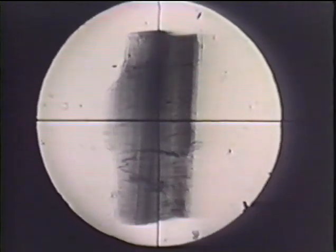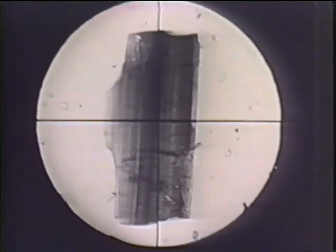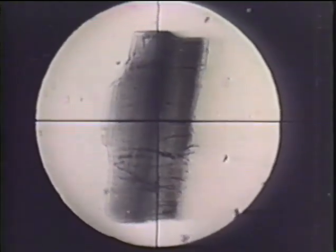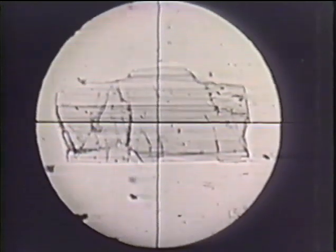Next we turn the stage through 90 degrees. Now the light is vibrating at right angles to the prism. There is again a Becky line and it now moves outward as the objective is lowered. This time the index of the crystal is higher than that of the mounting medium. Thus we have proved that tourmaline has different refractive indices for the two principal vibration directions. One is higher than that of the medium, the other is lower.